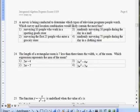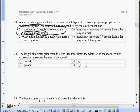Number 23: A survey is being conducted to determine which type of television program people watch. Which survey and location combination will likely contain the most bias? Bias means that it favors one side over the other, that it's unfair. Which survey seems the most unfair between these four choices? All four choices contain some sort of bias, but the survey and location with the most bias would be choice number one.